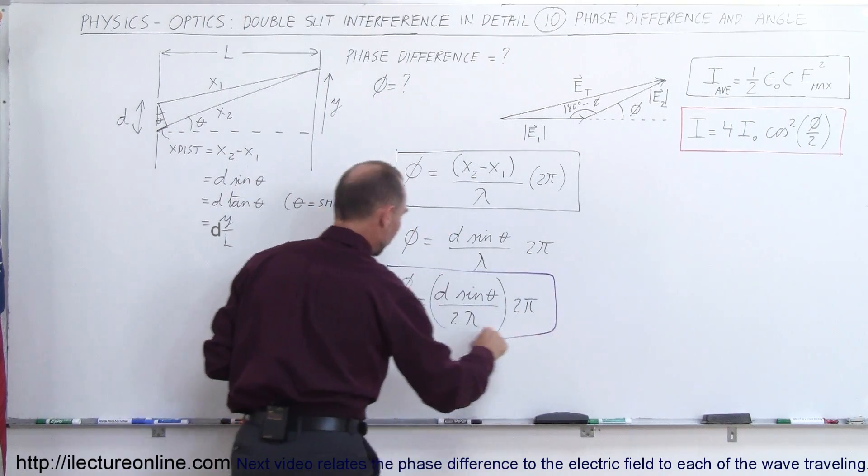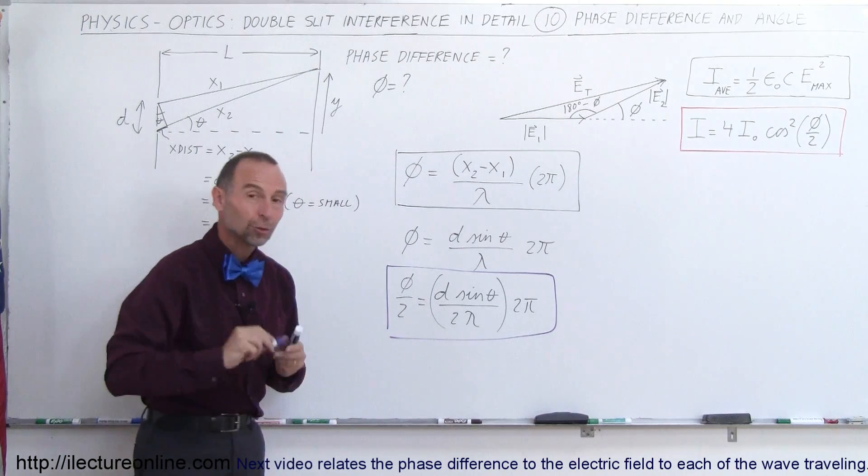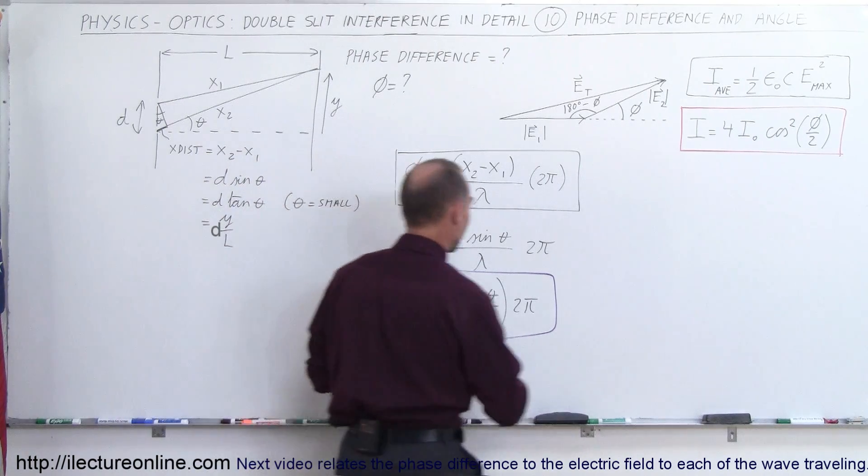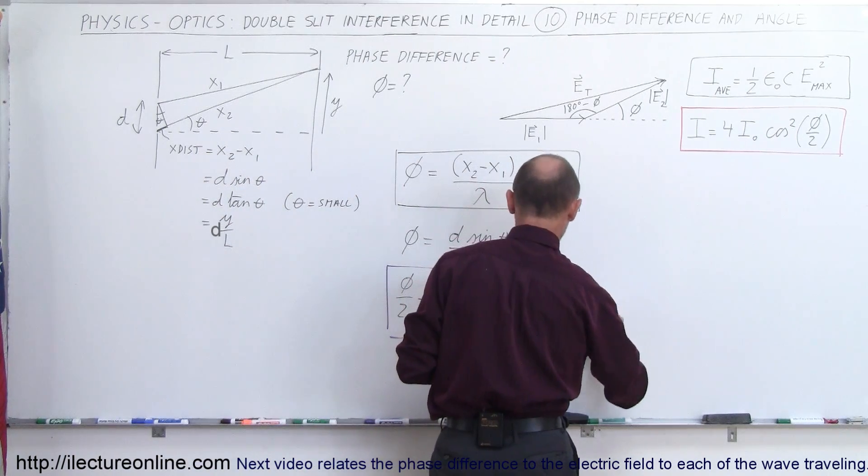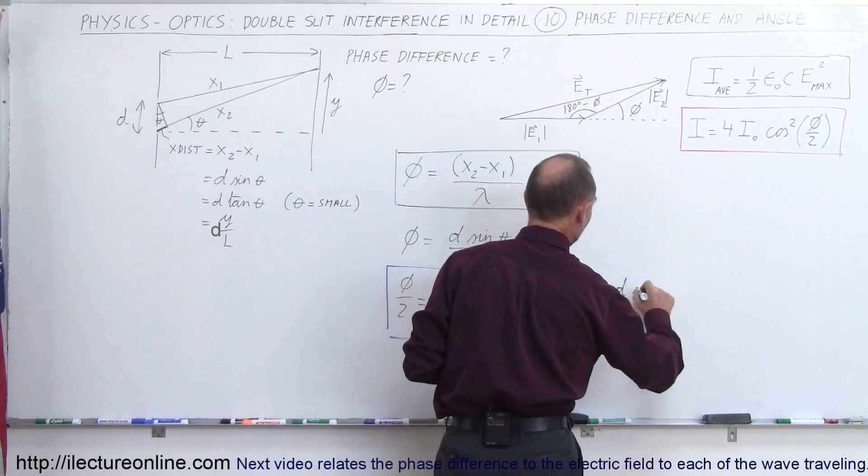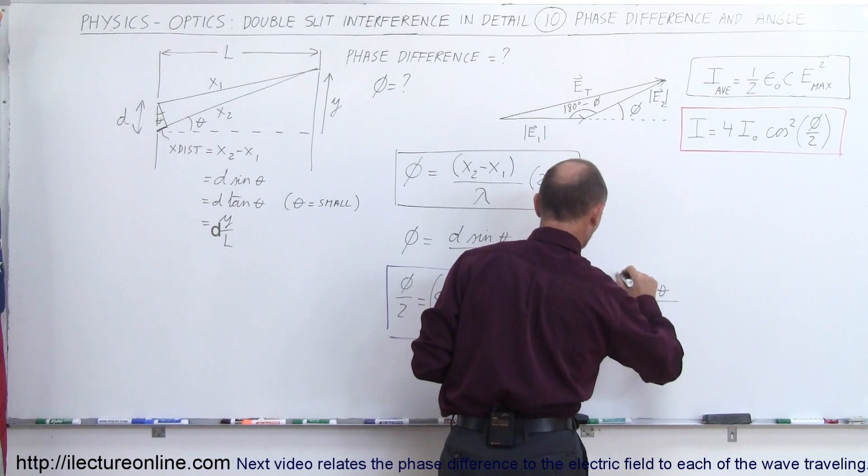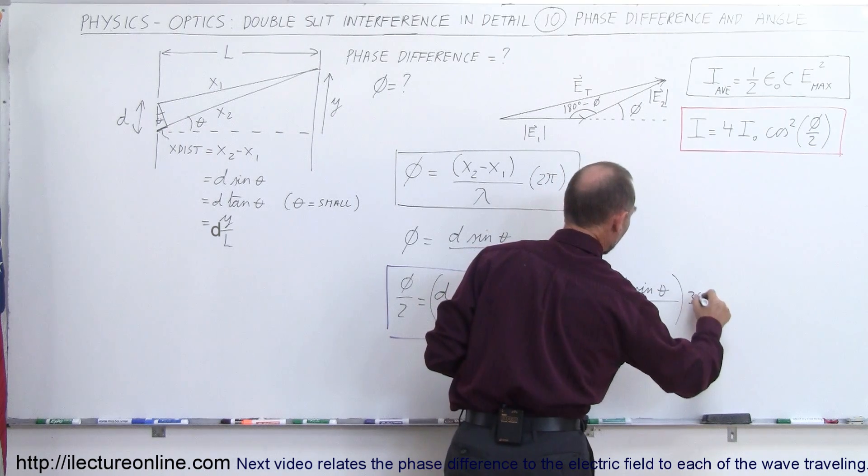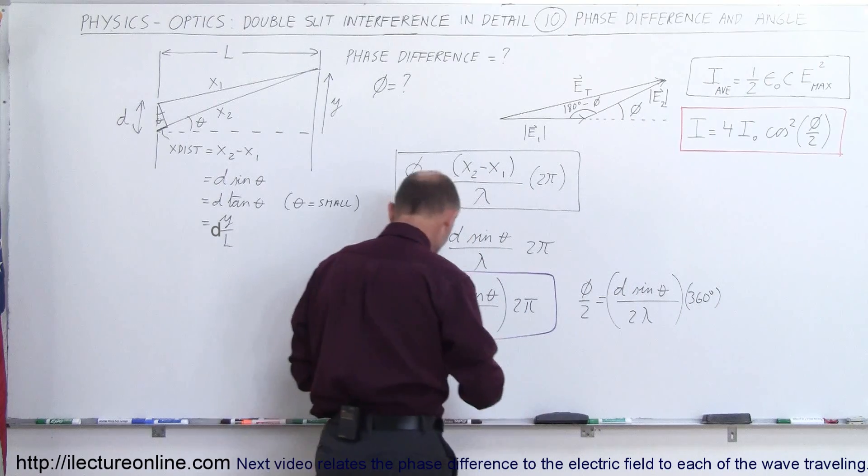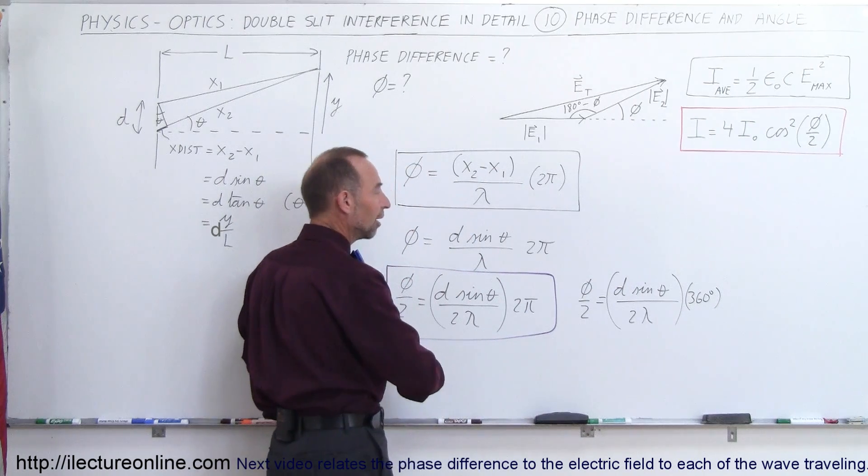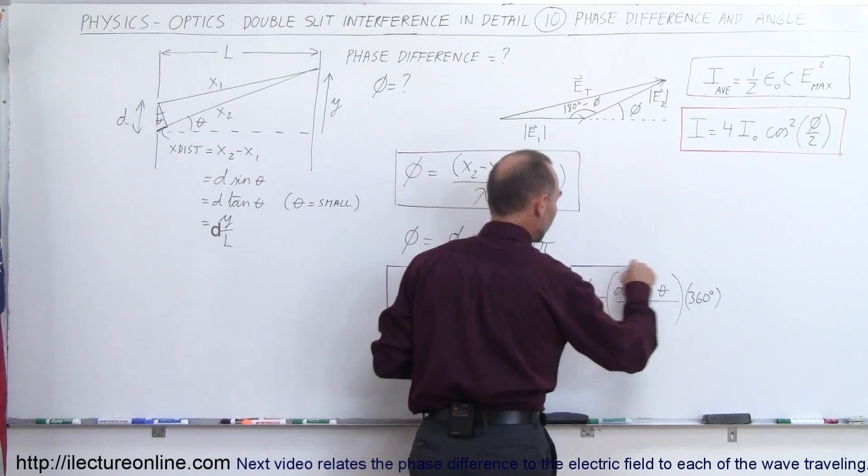Now, you can also, in case you like to work with degrees rather than radians, you can also write the equation as phi divided by 2 is equal to d sine theta divided by 2 times the wavelength, all times 360 degrees. So then if you do this, you'll have phi divided by 2 in terms of degrees instead of radians.